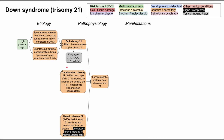Moving down, translocation trisomy 21 is the next most common variant, occurring in about 3–4% of patients with Down syndrome. In this case, you have a third copy of chromosome 21, but it's attached to another chromosome, usually chromosome 14. This is called an unbalanced Robertsonian translocation.